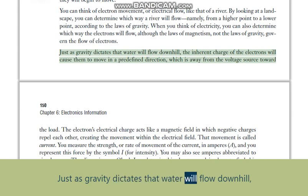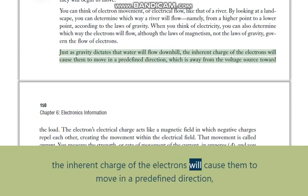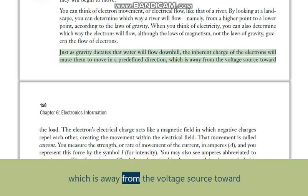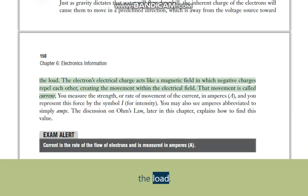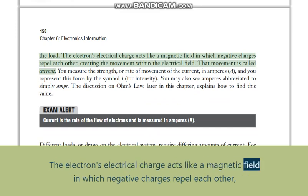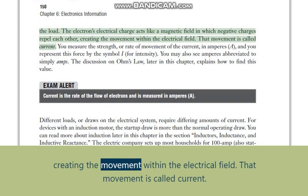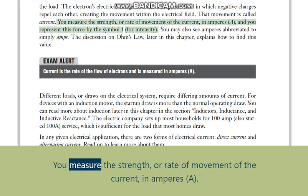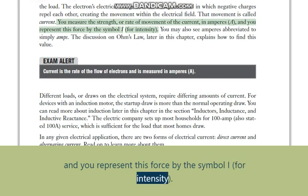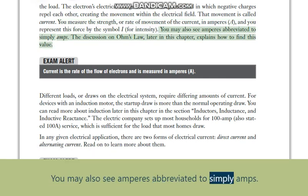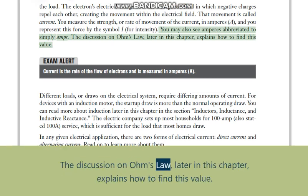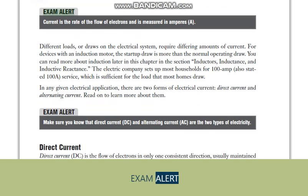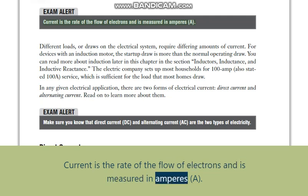Just as gravity dictates that water will flow downhill, the inherent charge of the electrons will cause them to move in a predefined direction — away from the voltage source toward the load. The electrons' electrical charge acts like a magnetic field in which negative charges repel each other, creating the movement within the electrical field. That movement is called current. You measure the strength or rate of movement of the current in amperes (A), and you represent this force by the symbol I (for intensity). You may also see amperes abbreviated simply as amps.